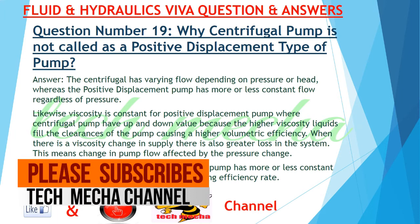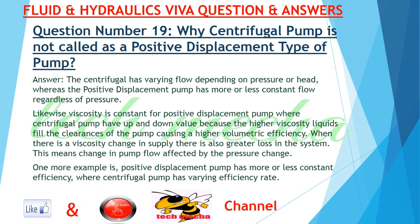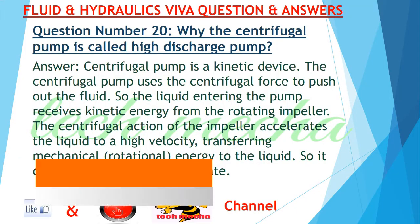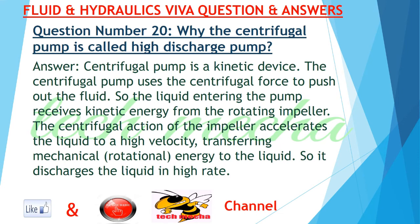Answer: The centrifugal pump has varying flow depending on pressure or head, whereas the positive displacement pump has more or less constant flow regardless of pressure. Likewise, viscosity is constant for positive displacement pump, whereas centrifugal pumps have varying values because higher viscosity liquids fill the clearances of the pump causing higher volumetric efficiency. When there is a viscosity change in supply, there is also greater loss in the system, meaning pump flow is affected by pressure change. Positive displacement pump has more or less constant efficiency, whereas centrifugal pump has varying efficiency rate.